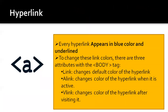Every hyperlink has some default settings or default colors — blue color and they are underlined. If you want to change these colors, we have three different attributes used in the body tag. Note that newer versions of HTML do not support these attributes. The link attribute denotes the default color of the hyperlink. The alink attribute specifies the color when the link is active. The vlink attribute specifies the color of the hyperlink after visiting it.